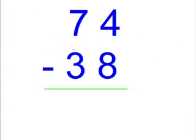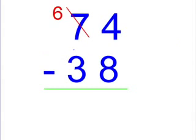First off, we start with the ones column. As you can see, we can't take away 8 from 4. So we have to borrow from the 10s column and make that 7 a 6. Now we add a 10 in the ones column.